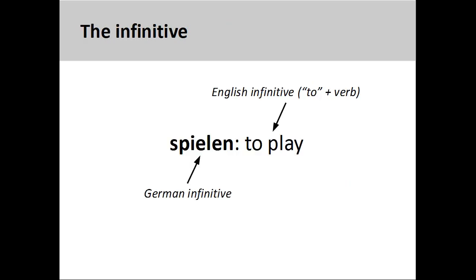To conjugate a verb in German, you begin with the infinitive form of the verb. This is the form that you will find in the dictionary. You will note that English uses 'to' with a verb to form the infinitive, but German does not do this.